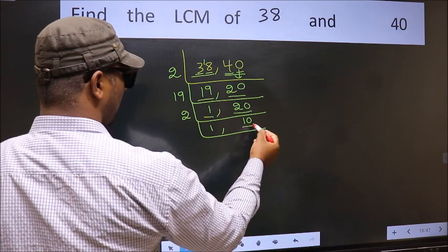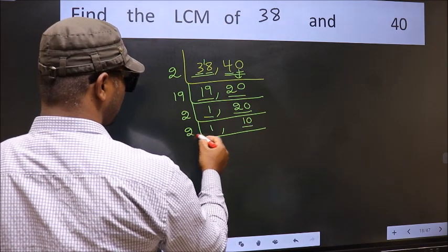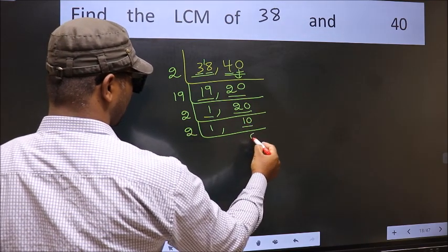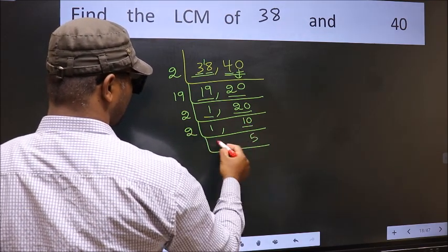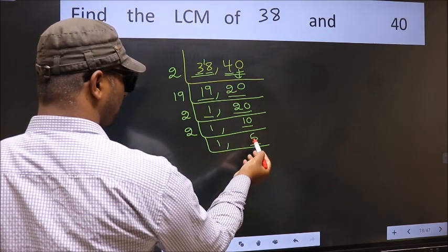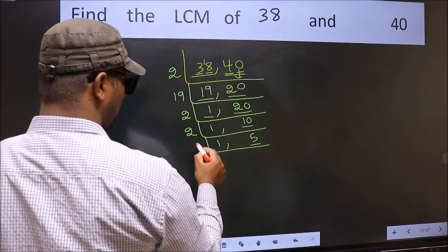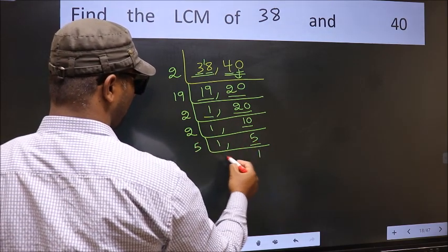Now we have 10. 10 is 2 fives, so 10 divided by 2 gives 5. Now we have 5. 5 is a prime number, so 5 once is 5.